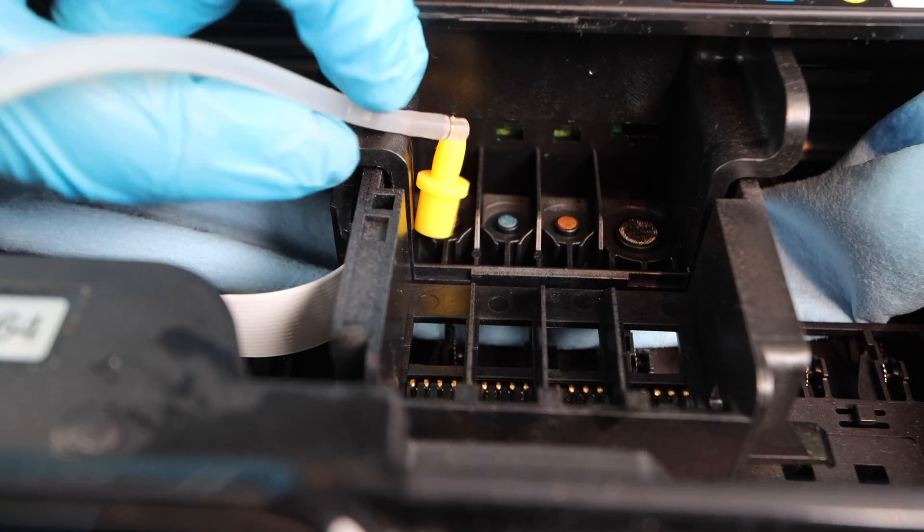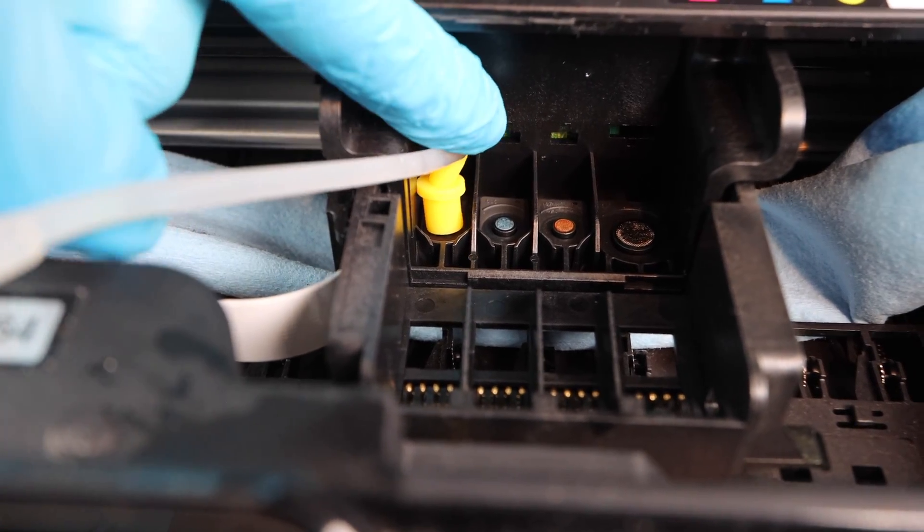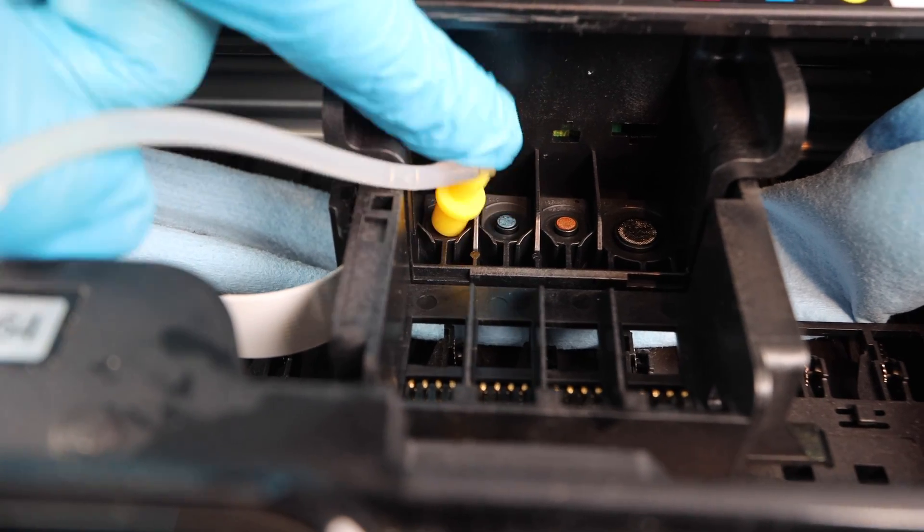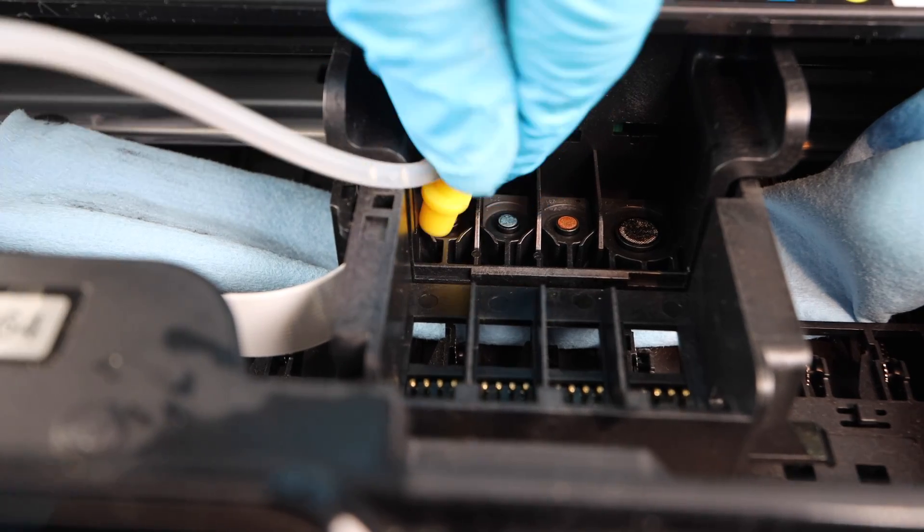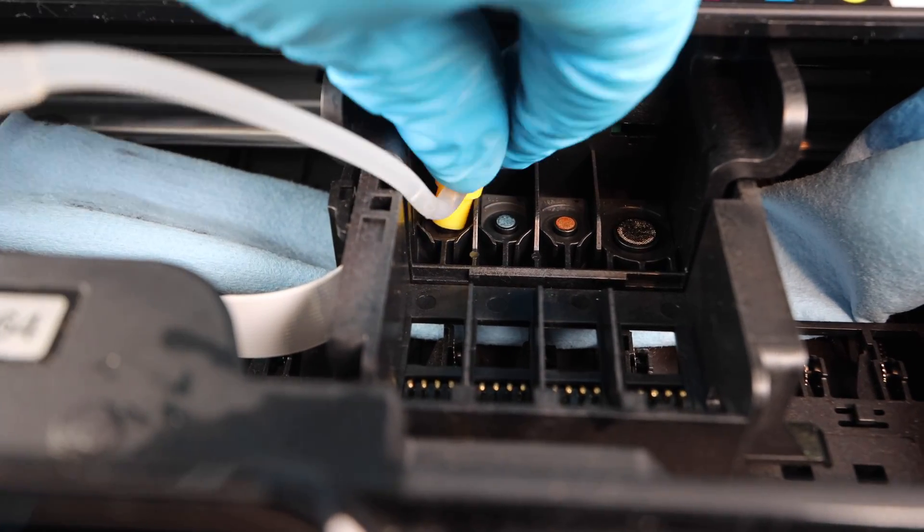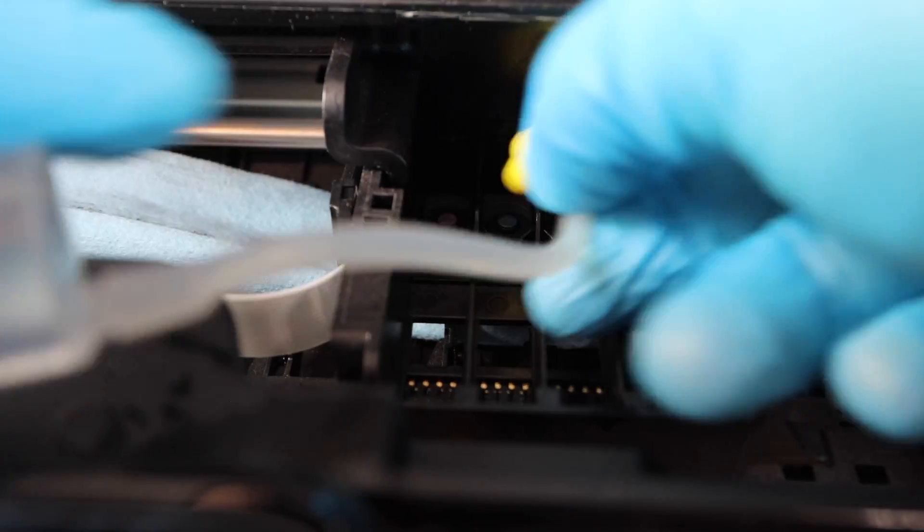This yellow one is only for color, magenta, cyan, and yellow. And you're going to take this attachment, attach it to the silicone tubing, which is already attached to the syringe on this product. And you're going to fit that over whatever color is giving you the most issues.